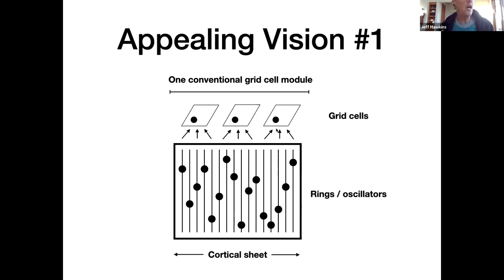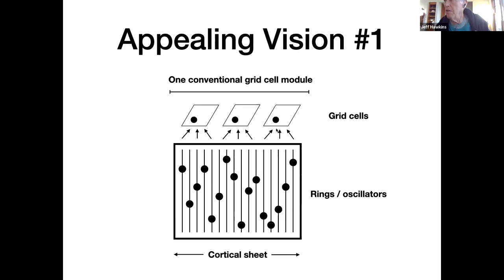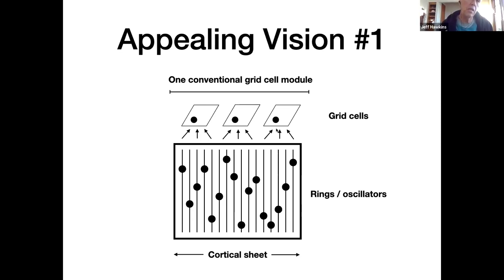One of the things we know from biology is that when you're moving, these oscillators are voltage-controlled — their speed is controlled. It's a theta frequency and it increases a little bit based on how fast you're moving. As soon as you stop moving, one of the things you might get from having a 2D torus for the 2D grid cells is you have center-surround inhibition, which locks these guys in and holds them in place. It also enforces smooth movement of the active cells as you move.